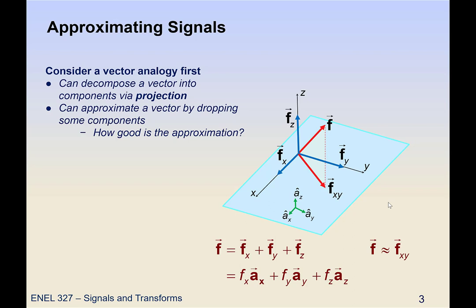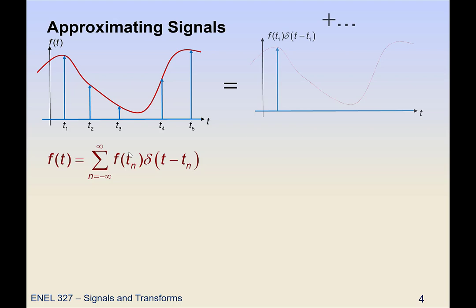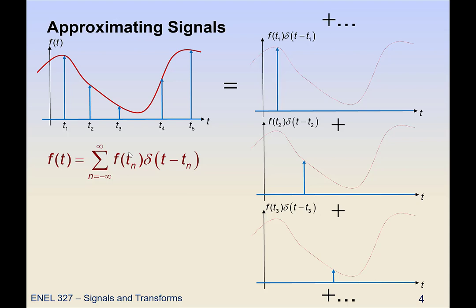Well we can do the same thing with signals. So let's say we have a signal f. We have already talked about approximating it with a number of impulses and each of those impulses would have an amplitude equal to the value of the function at that point. We'll call it f. Now in the limit when those impulses get infinitely close together, then that sum has to become an integral.